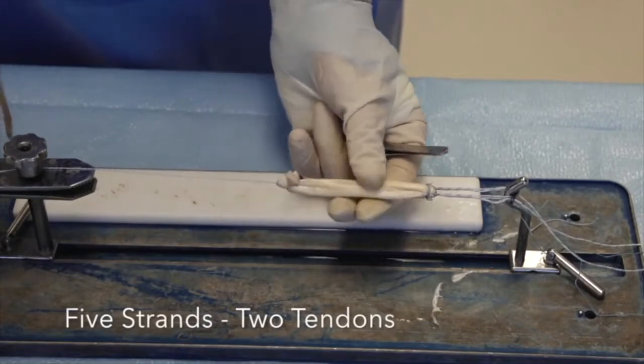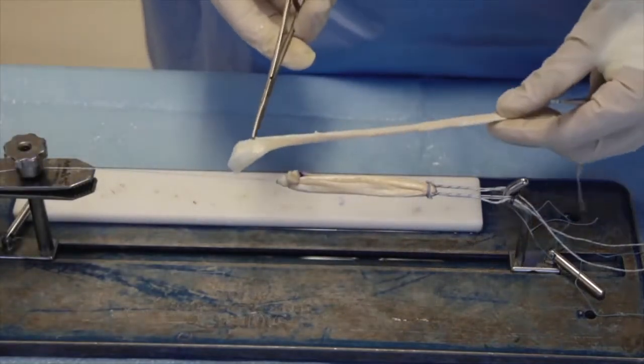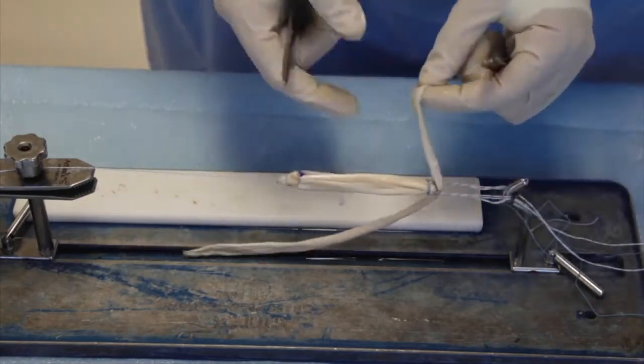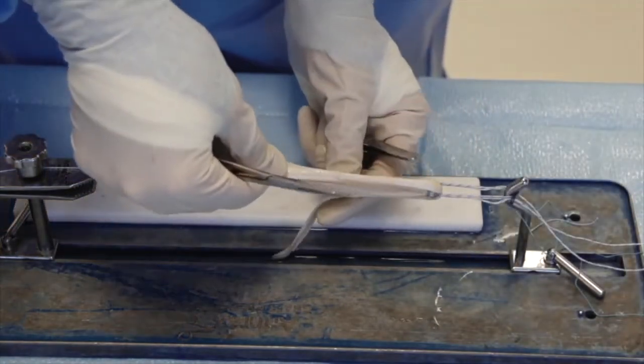Next we will demonstrate the five strand technique with two tendons. A three strand graft is prepared with one tendon as demonstrated previously. The other tendon is loaded in the same suspensory device alongside it.